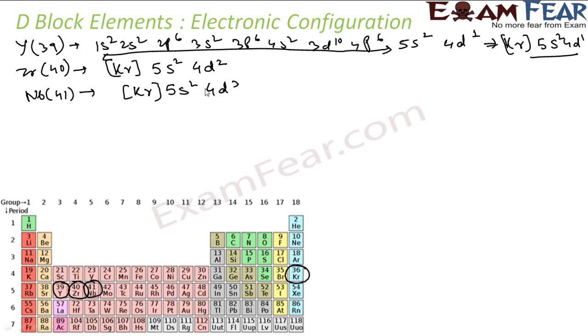Now here also there is a catch. Here also what happens is actually one electron moves from s to d. S and d, the energy level is not that high. So you get krypton 5s1 4d4.